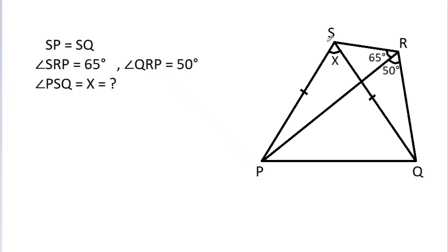We have given that SP is equal to SQ, angle SRP is 65 degrees, angle QRP is 50 degrees, and angle PSQ is x. We have to find x.